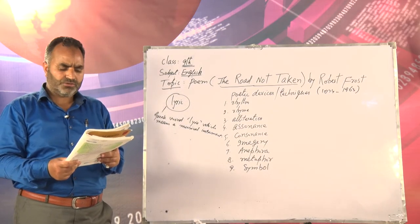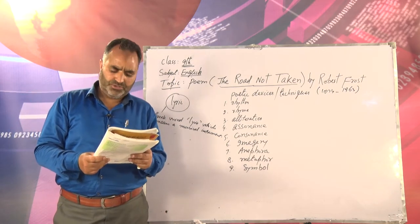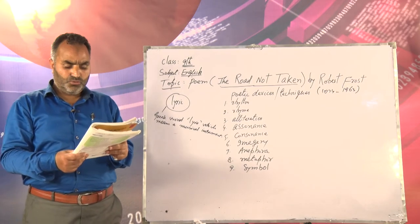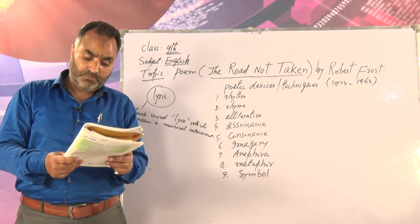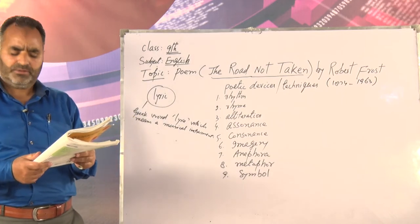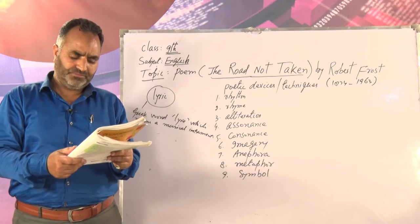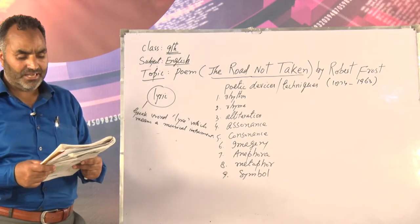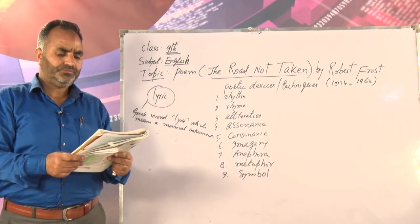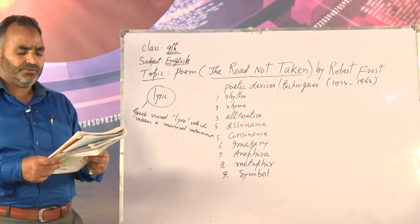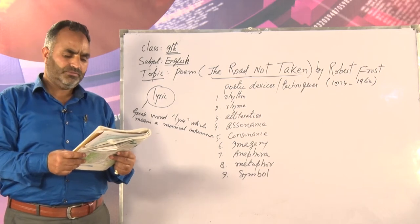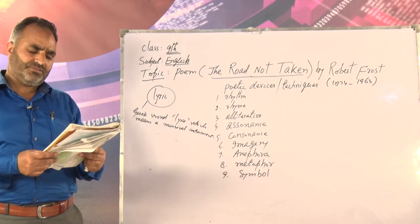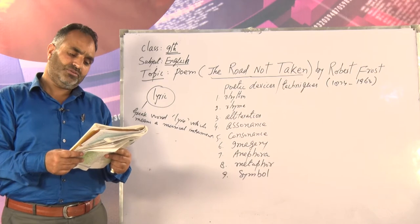Two roads diverged in a yellow wood, and sorry I could not travel both and be one traveler, long I stood and looked down one as far as I could to where it bent in the undergrowth. Then took the other, as just as fair, and having perhaps the better claim because it was grassy and wanted wear — though as for that the passing there had worn them really about the same. And both that morning equally lay in leaves no step had trodden black. Oh, I kept the first for another day! Yet knowing how way leads on to way, I doubted if I should ever come back. I shall be telling this with a sigh, somewhere ages and ages hence: two roads diverged in a wood, and I — I took the one less traveled by, and that has made all the difference.